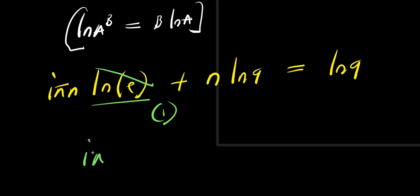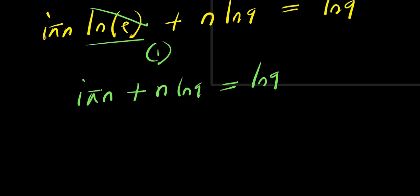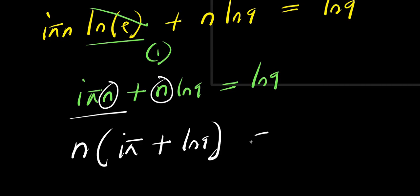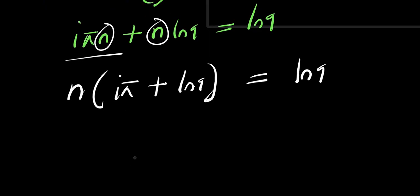So we have i times pi times n, plus n times natural log of 9, equals natural log of 9. Right now I have n here and n here — I can factor out n. I have n times i·π plus natural log of 9, equals natural log of 9. Now remember, natural log of 9 equals natural log of 3 to the power of 2.